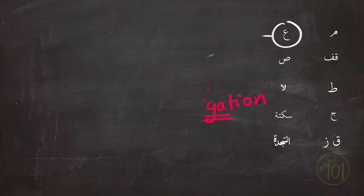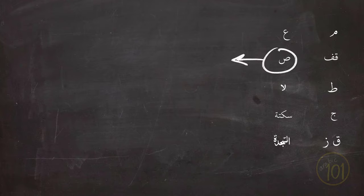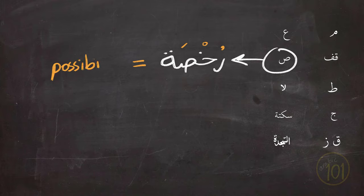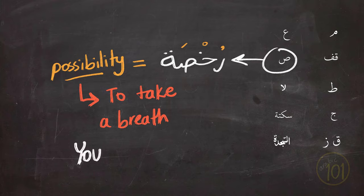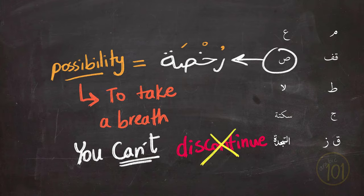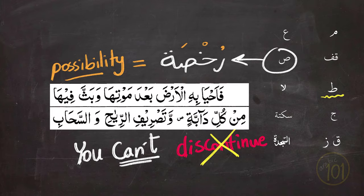Next is the sign of Saad, and Saad stands for the word Rukhsa, which refers to the possibility to stop here to take a breath without repeating anything from before where you stopped, as long as you will not discontinue reading completely. So in a sense it is very similar to the Ta sign, but the only difference is that here with Saad you can't discontinue or stop reading altogether.